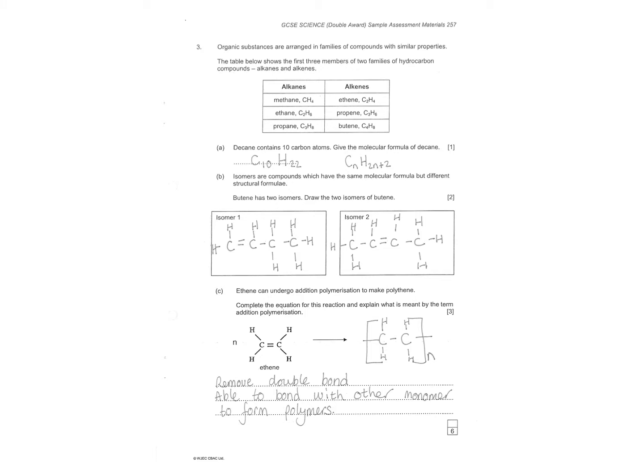Decane contains 10 carbons. Give them a molecular form of decane. So it's A-N-E. So you get your general formula. You have to learn the two general formulas. Just put it in. So carbon would be 10. Hydrogen, 22.